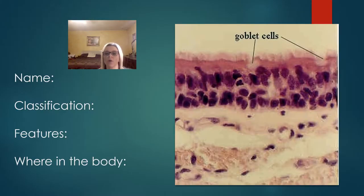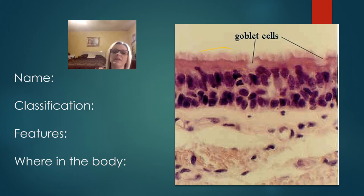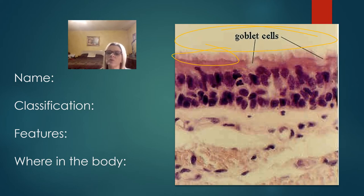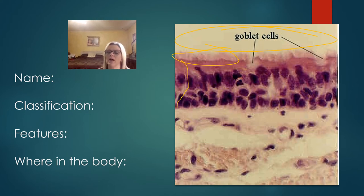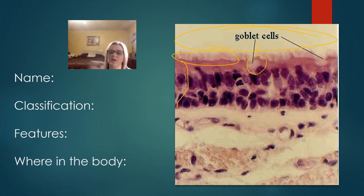This is a kind of hard one. It does have goblet cells identified. I can see some cilia at the top and a free surface, so I know it is epithelium. This has a stratified appearance but isn't truly stratified. This is pseudostratified columnar epithelium and it is ciliated. The features are those goblet cells. You'll find this in areas of the trachea.